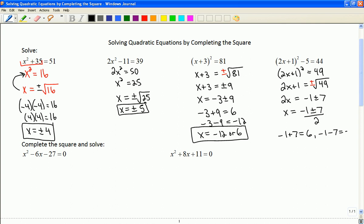Negative 1 minus 7 is going to be negative 8. So I'd have 6 over 2 or negative 8 over 2. So final answers here then would be x equals 3 or negative 4.